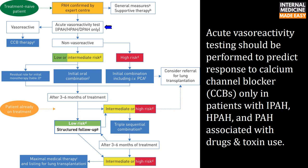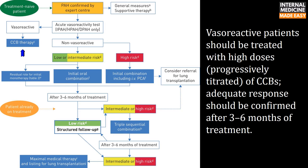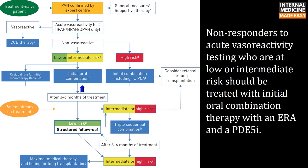Acute vasoreactivity testing should be performed to predict response to calcium channel blockers only in patients with idiopathic PAH, hereditary PAH, and PAH associated with drugs and toxins. Vasoreactive patients should be treated with high doses of calcium channel blockers; adequate response should be confirmed after 3–6 months. Non-responders at low or intermediate risk should receive initial oral combination therapy with an endothelin receptor antagonist and a phosphodiesterase type-5 inhibitor.